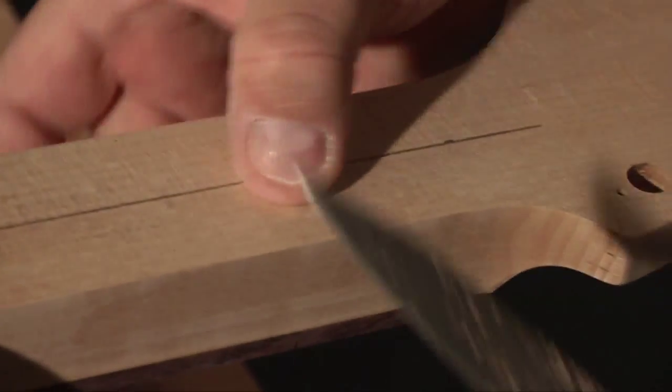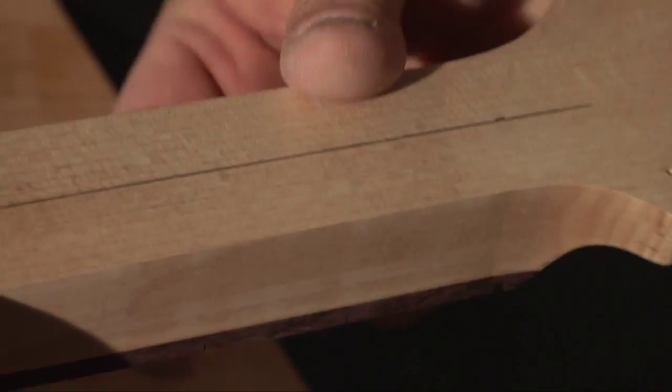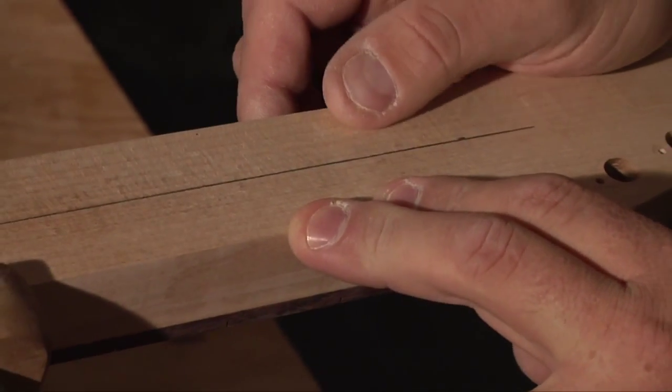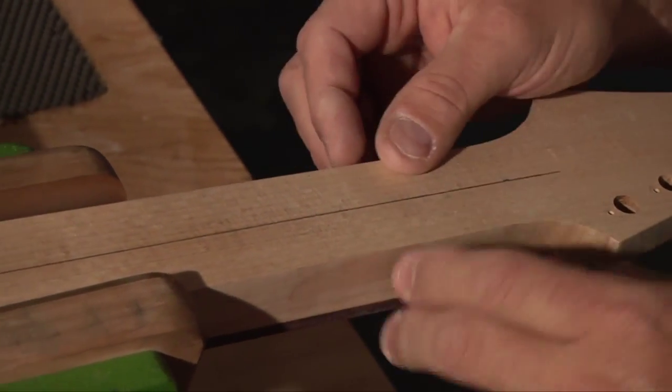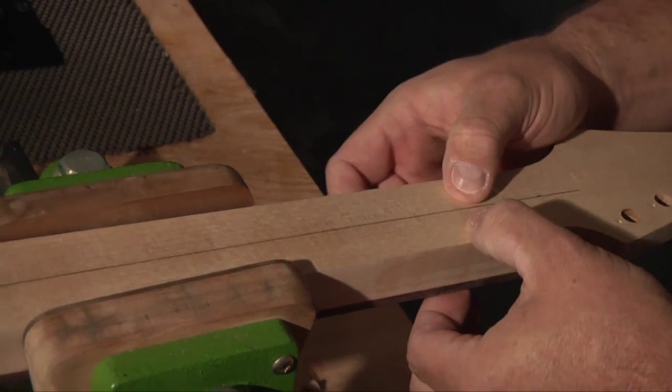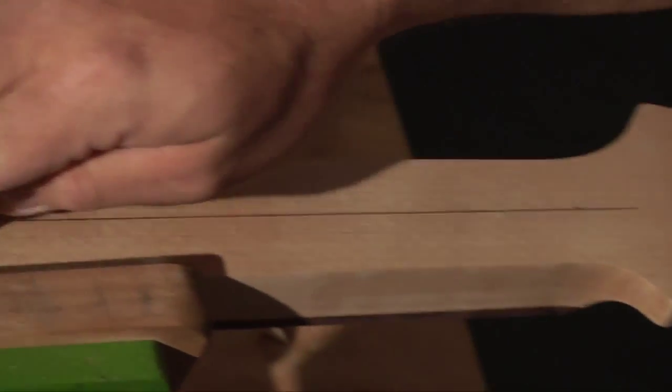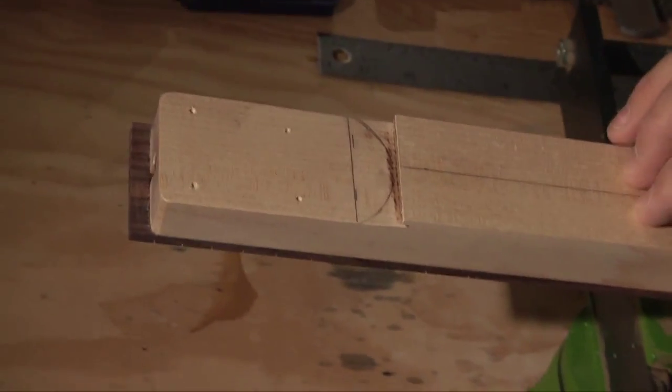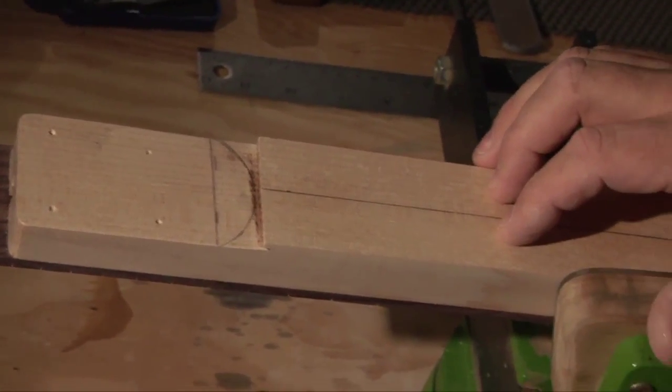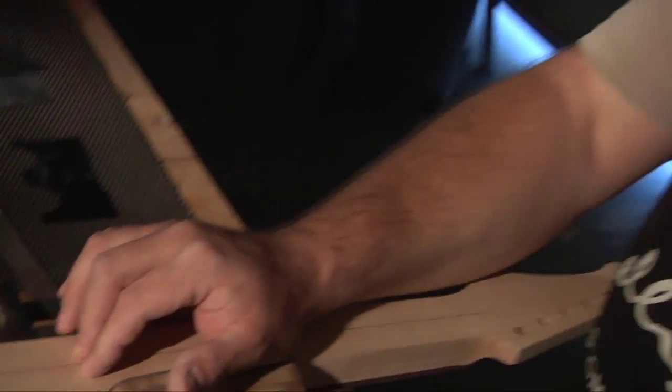So at the first fret here, I'm basically going to carve this down. I like a C-shaped neck, it's very comfortable. I'm going to start it, we're going to take it down about 0.085, and graduate to the 12th fret to about 0.090, just under an inch.